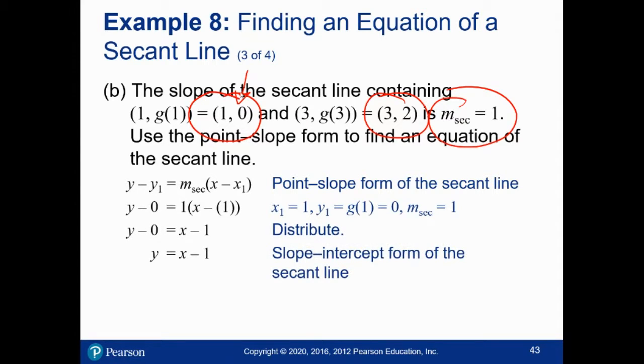Okay. If we had used the other point, we would say y minus 2 is equal to 1 times x minus 3. y minus 2 is equal to x minus 3. Add 2 to both sides and get y is equal to x minus 1. It's the same line.